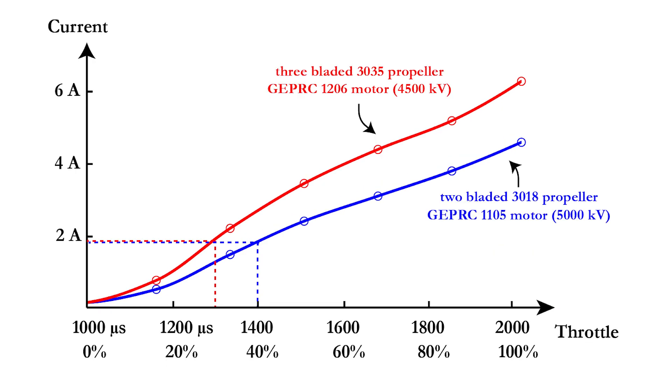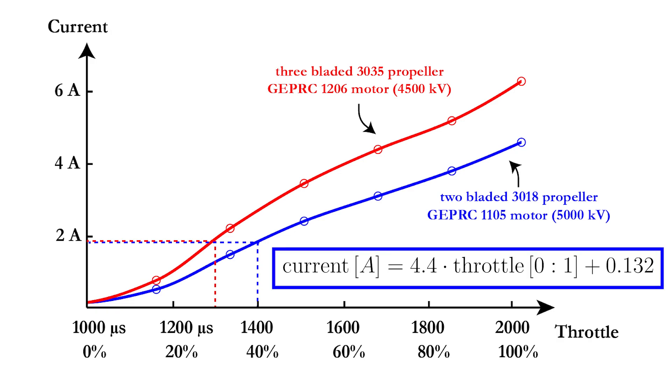Let's repeat this by plotting the consumed current in function of the throttle. Because you also consume some current when the motor is not turning, the resulting linear equation is a little bit more complicated.